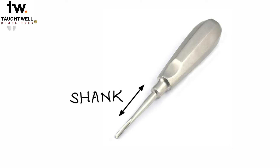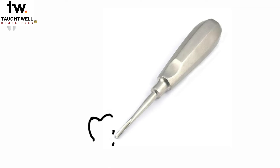This is the shank of the instrument. It transmits the forces that we apply to the blade, which is the working tip of the elevator. Whatever force it receives via the shank, it transmits that force onto the tooth or the bone where it is applied.